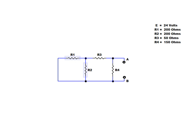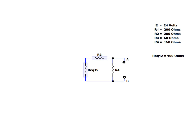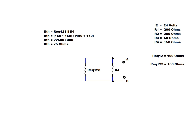First, calculate the equivalent resistance of R1 in parallel with R2 by using the Product-over-Sum rule. Next, sum the series resistances R3 and REQ-1-2. To complete the calculation of RTH, combine the parallel resistances R4 and REQ-1-2-3. In this example, the Thevenin-equivalent resistance is equal to 75 ohms.